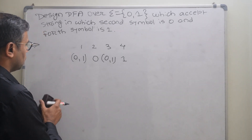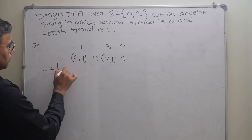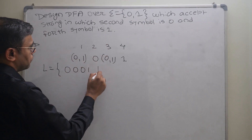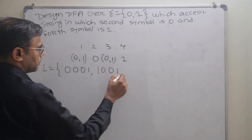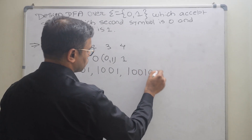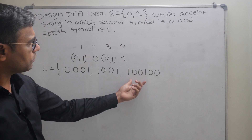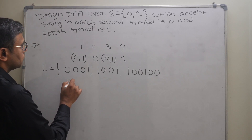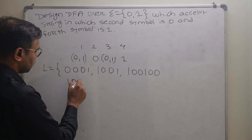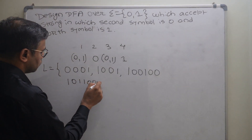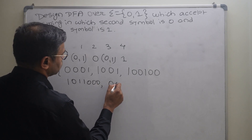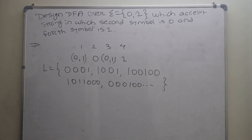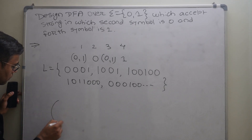Before construction of the DFA, let me write the possible values. The language L contains strings like 0001, where the second symbol is 0 and the fourth symbol is 1. Then 1001, then 1001 followed by more characters like 0010. The string can be of any length, as long as the second and fourth symbols satisfy the conditions. So we can also have strings like 1011, 0010, 00010, and so on — there are a lot of possibilities.